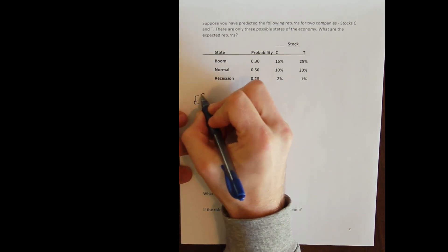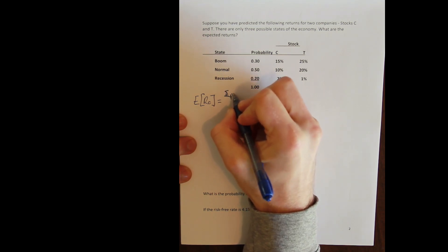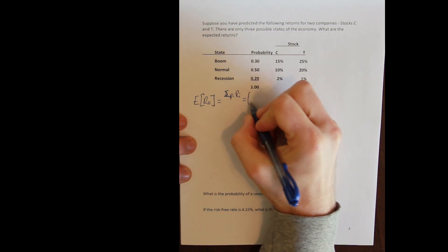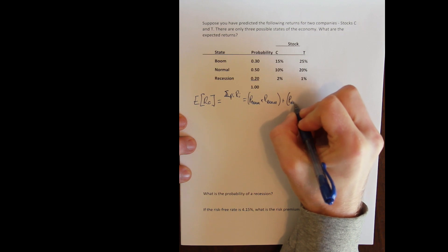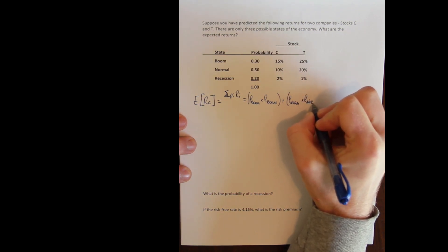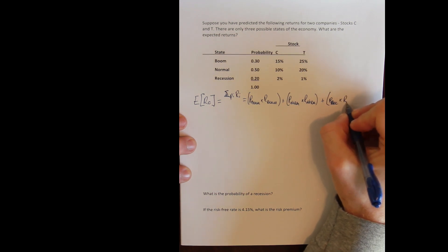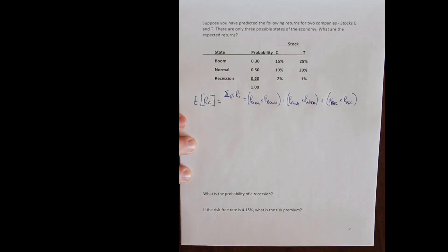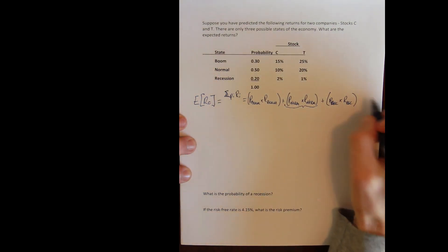The process is the same, it's just going to take a little bit longer. Our formula for expected return — the sum of the probability of each state times the return in each state — expands to three terms: probability of boom times return in boom, plus probability of normal times return in normal, plus probability of recession times return in recession. You could include any number of states, though the calculation gets more tedious with more states.